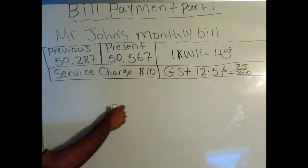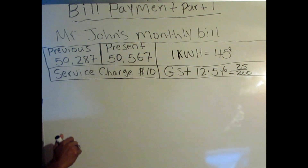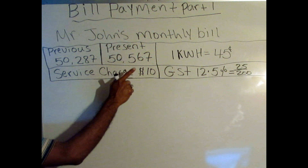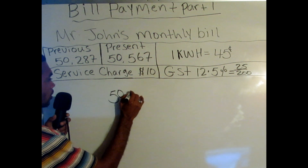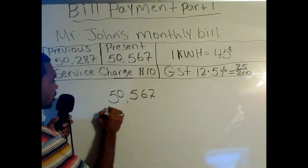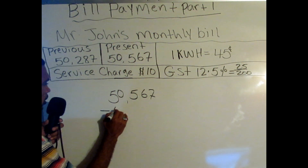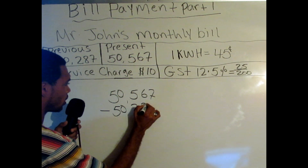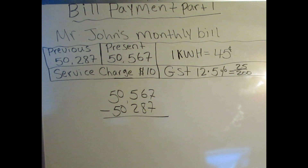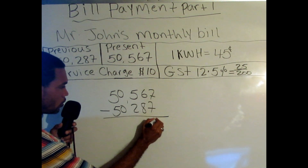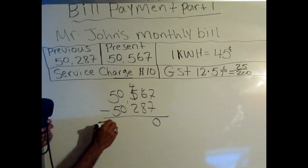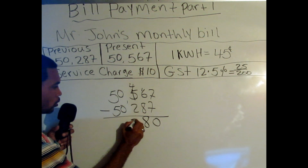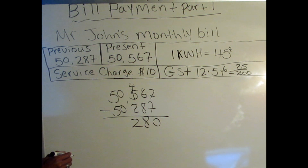For step one, the first thing you're going to do is minus the present from the previous, and that will tell you how much kilowatts Mr. John used so we can multiply it by 45 cents. So it's the present, 50,567, minus the previous, 50,287. Seven from seven is zero. Six from eight can't — borrow from the five. The five becomes four, this becomes 16. 16 minus 8 is 8, and 4 minus 2 is 2. Mr. John used 280 kilowatts.